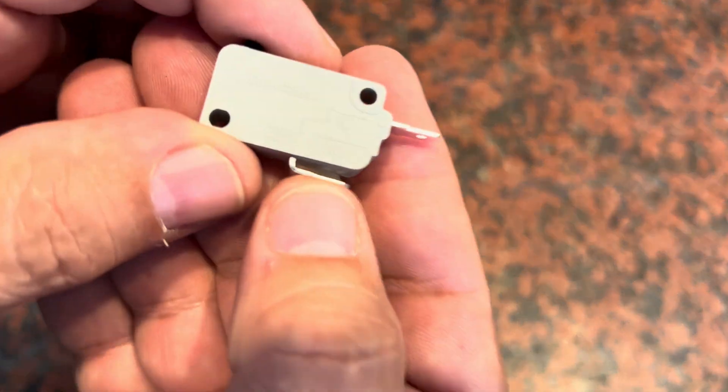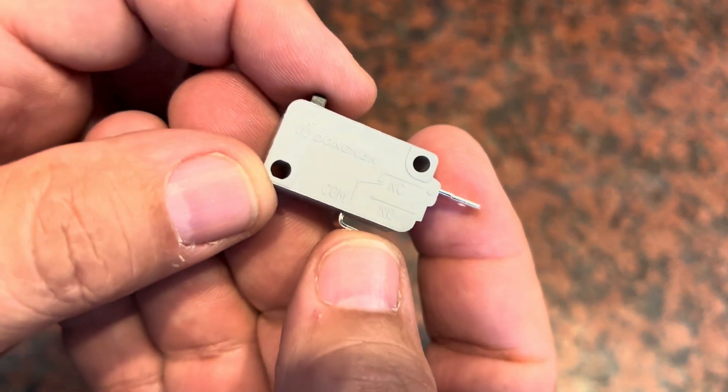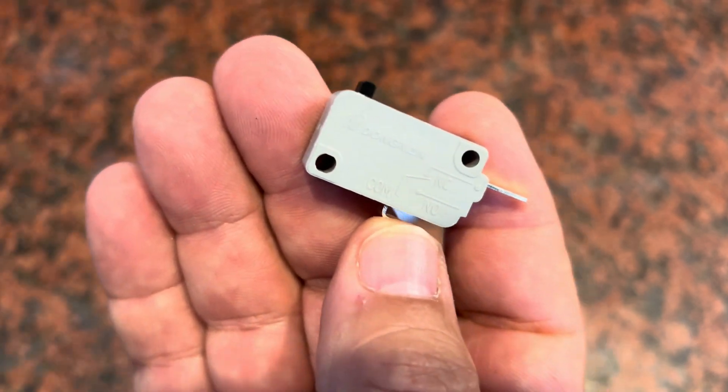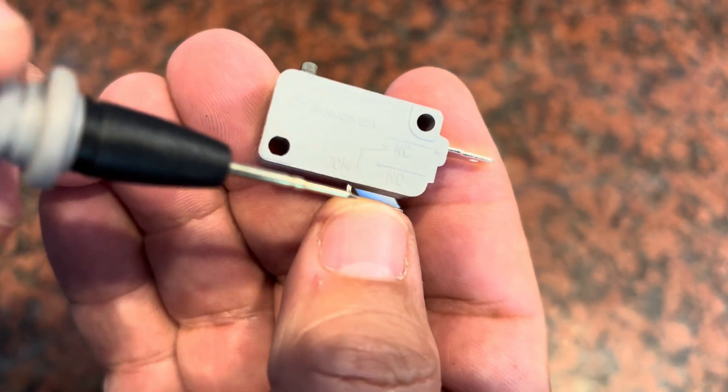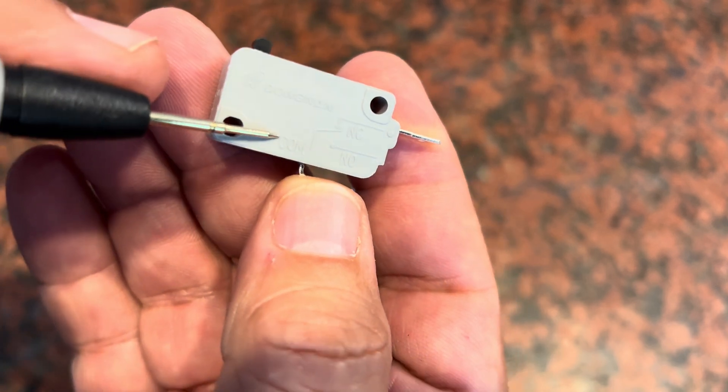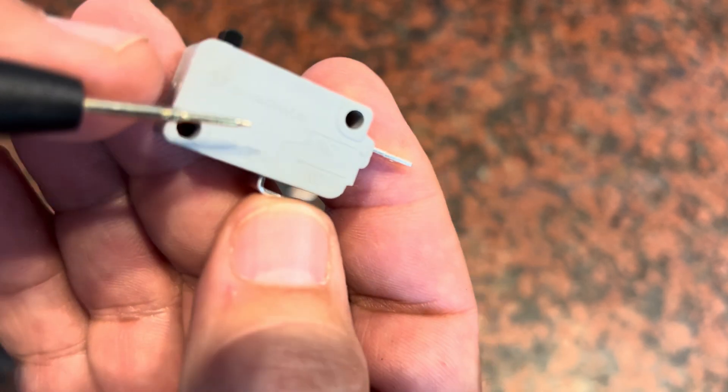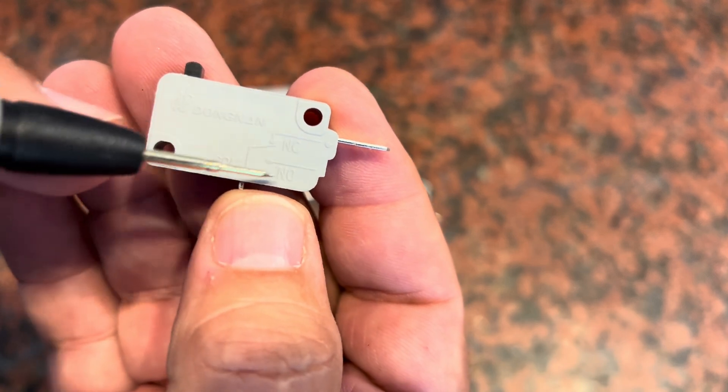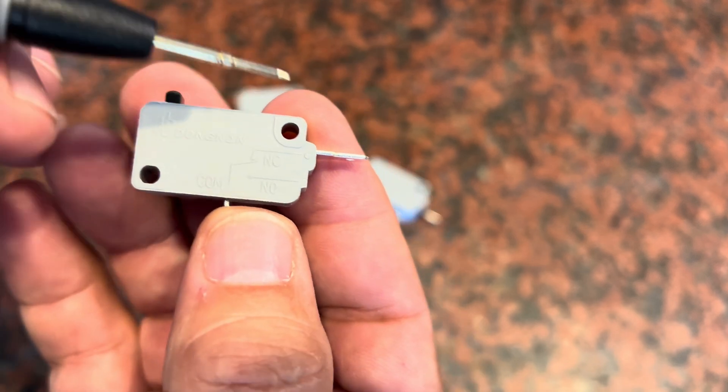What matters is look at the side of the switch that you're replacing. You can see here that these show normally open, normally closed, and common. Those three things are the key for the switch so they're all pretty much the same.